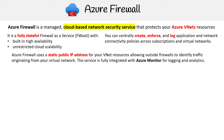Azure Firewall uses a static public IP address for your VNet resources, allowing outside firewalls to identify traffic originating from your virtual network. The service is fully integrated with Azure Monitor for logging and analytics.